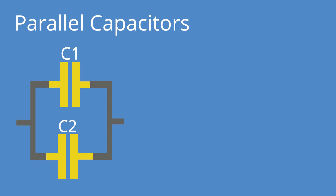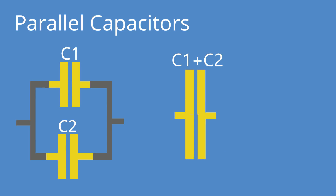For capacitors in parallel, the voltages across each of the capacitors are the same. This makes adding them together really easy, because you can think of all the top plates as connected together and all the bottom plates connected together since they have the same voltage — giving you one giant mega capacitor. Which means C1 + C2 + C3, etc., equals C total. Really nice and easy, and we love that.